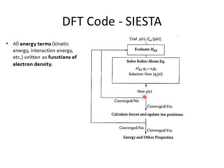If the new electron density is the same as the input electron density, the calculation is converged. SIESTA will then calculate the forces applied on the material and update the atom positions. SIESTA will check if the forces are small enough — for example, smaller than 0.01 electron volt per Angstrom — and if so, the code has found the ground state structure of the material.